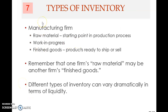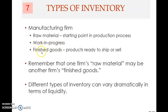Before we move further, let's look at the various types of inventory. In a manufacturing firm, there are three broad categories. The first is raw material — materials and components bought from suppliers. The second category is finished goods: goods that have completed the manufacturing or production process and are ready to be sold to the customer.